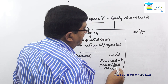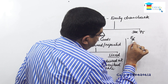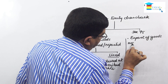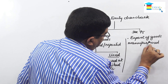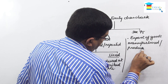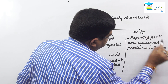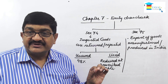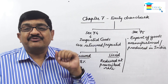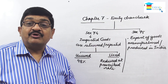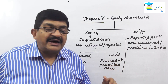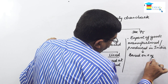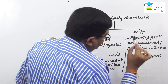Section 75 is relevant for the export of goods manufactured or produced in India. If imported material has been used in the manufacture or production of goods and those are exported, then duty drawback is available under section 75. In this case, duty drawback is based on a certain percentage of the export value of the goods — either FOB or realized, whichever is less.